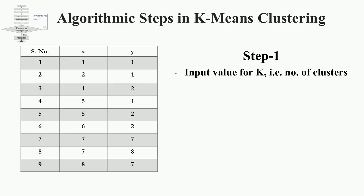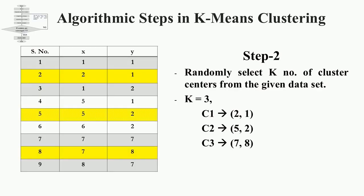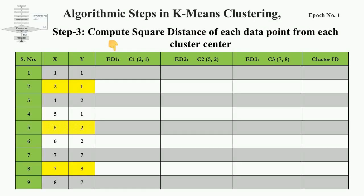Step 1: take the value of K as the number of clusters as input to the algorithm. K should be greater than 1; K is 3 in this example. Step 2: randomly select any K number of cluster centers. As K is 3, take any three sets of X and Y as initial cluster centers — say, cluster 1 is C1 at (2,1), cluster 2 is C2 at (5,2), and cluster 3 is C3 at (7,8). Step 3: put all the dataset points against all three initial cluster centers — C1(2,1) in ED1 column, C2(5,2) in ED2 column, and C3(7,8) in ED3 column.